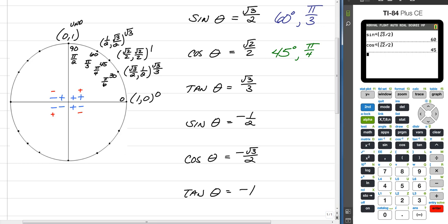So one last one in quadrant 1 would be tangent is the square root of 3 over 3. And we can see right here that's a 30 degree angle, also known as pi over 6. So when we are looking for a theta or an angle measurement of a positive ratio, we are always going to pick quadrant 1.